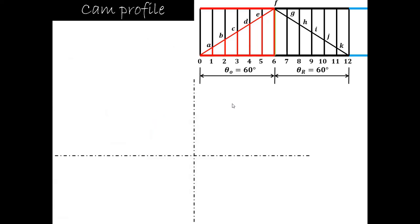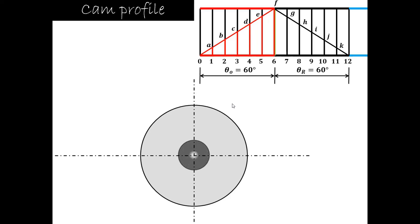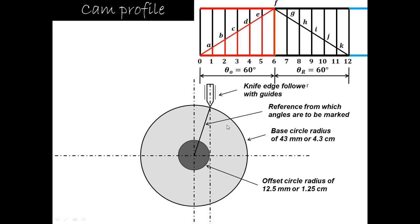For the offset follower, we must be very careful. First, draw the base circle of 43 mm or 4.3 cm. Then draw a vertical line offset by 12.5 mm on the right-hand side — this is the offset circle of 1.25 cm radius. Where this vertical line cuts the base circle, join that point to the center to get the reference line. Construct the knife edge follower with guides at this position. Angles will now be marked from this reference line rather than from the vertical center line.